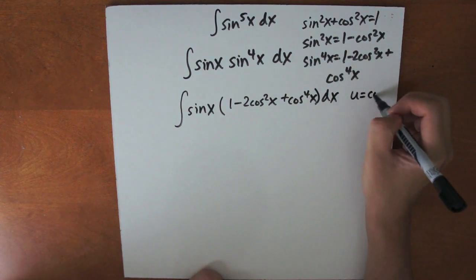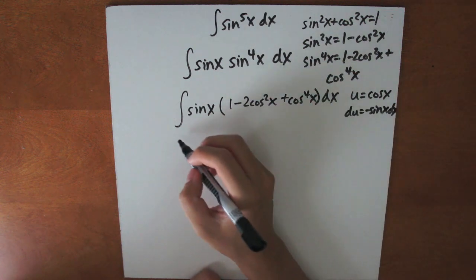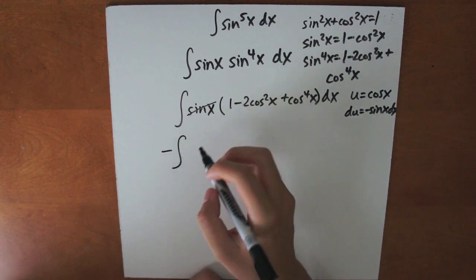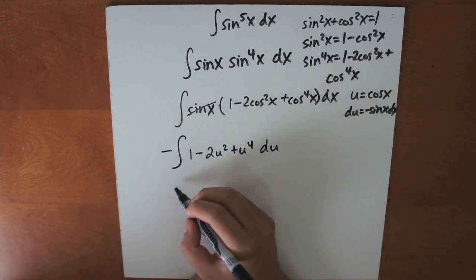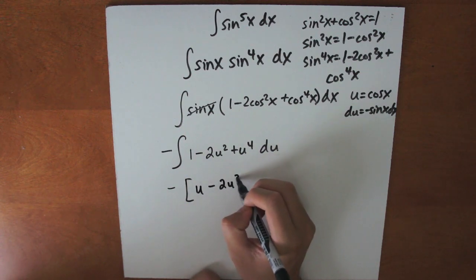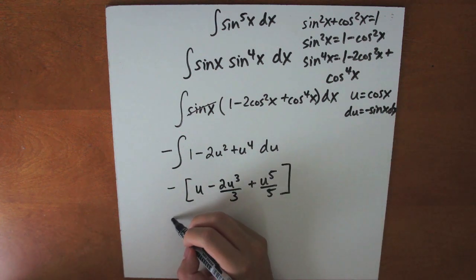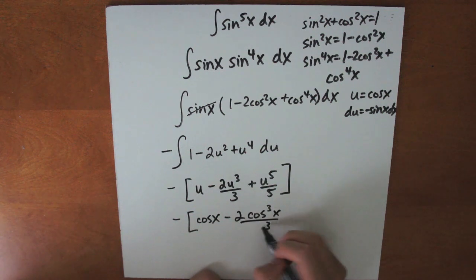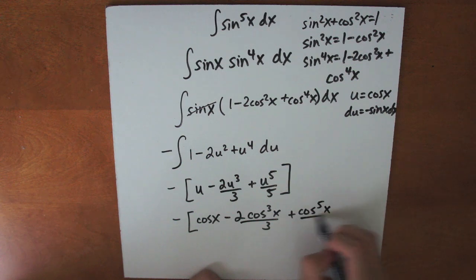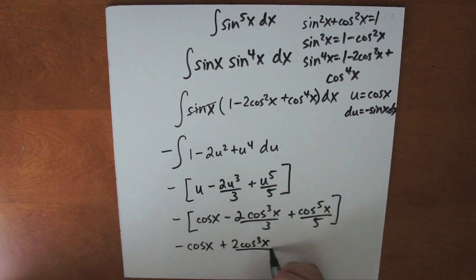Now we use the substitution u equals cosine x, therefore du equals minus sine x dx. Substituting, the sine x cancels out and we get the integral of minus (1 minus 2u squared plus u to the fourth) du. Evaluating gives minus u minus 2u cubed over 3 plus u to the fifth divided by 5. Substituting back and simplifying, we get minus cosine x plus 2 cosine cubed x over 3 minus cosine to the fifth x over 5. And that's our final answer.